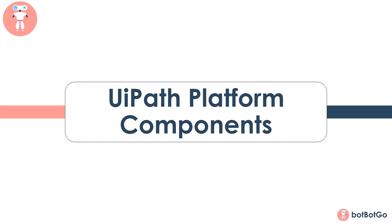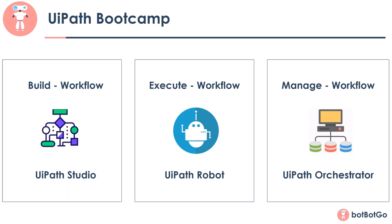The UiPath platform offers you components not only to design and develop automation projects, but to also execute and manage them. These components are divided on the basis of some functionalities. The first is building a workflow — the design and development of automation workflows is done using UiPath Studio. All developed workflows can then be executed using a UiPath robot. The UiPath Orchestrator is a web-based dashboard to manage, control, and monitor different robots and the processes being deployed.